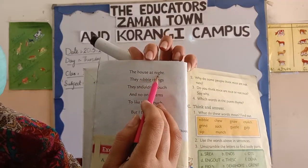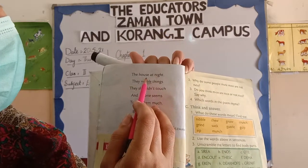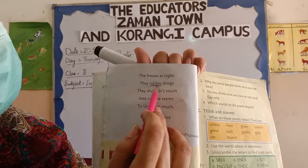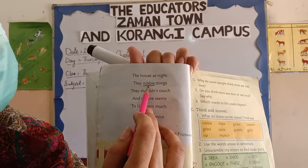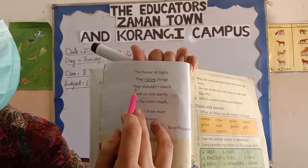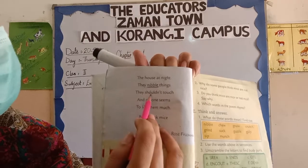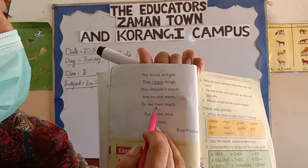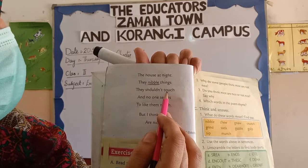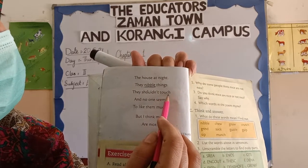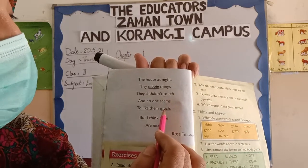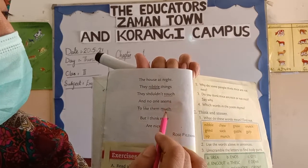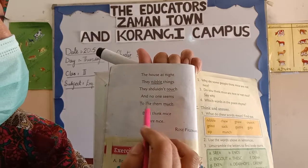The house at night — the poet is saying all the night they run here and there. They nibble things. Do you know what nibble means? Nibble means to cut — they cut and eat things they shouldn't touch. And no one seems to like them much. You can see here are some rhyming words in the poem, like touch and much, because they both have the same sounds. Words with the same sounds are called rhyming words.